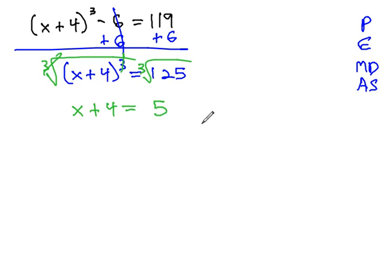In this problem, we're working with an odd root, so we only need one answer that matches the sign of the 125. x plus 4 equals positive 5.